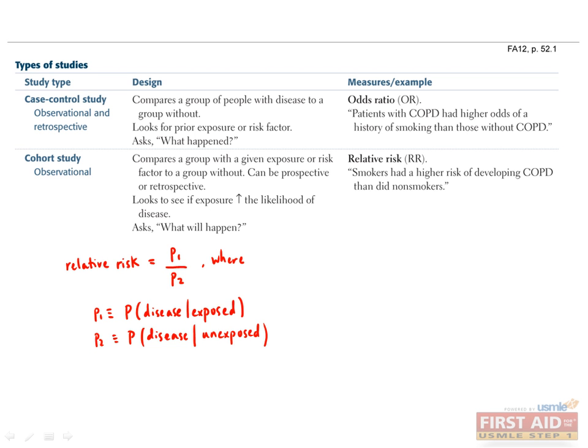An example of a cohort study would be looking at uncontrolled hypercholesterolemia and future risk of myocardial infarction. Here you are looking into the future to see if groups with uncontrolled hypercholesterolemia have a higher likelihood of developing a myocardial infarction than groups without uncontrolled hypercholesterolemia. Suppose that p1 is 0.75 and p2 is 0.25. Substituting these numbers into the relative risk equation, we get a relative risk of 3.